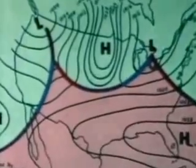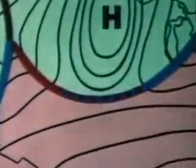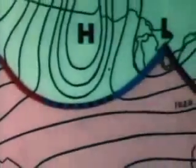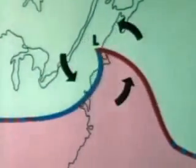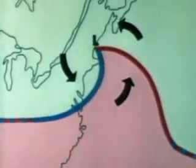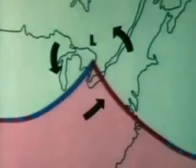When neither air mass pushes into the other, the front between them is called stationary. When the colder air mass retreats from the warmer, its trailing edge is called a warm front. When, however, the colder air mass pushes forward into the warmer, its leading edge is called a cold front.